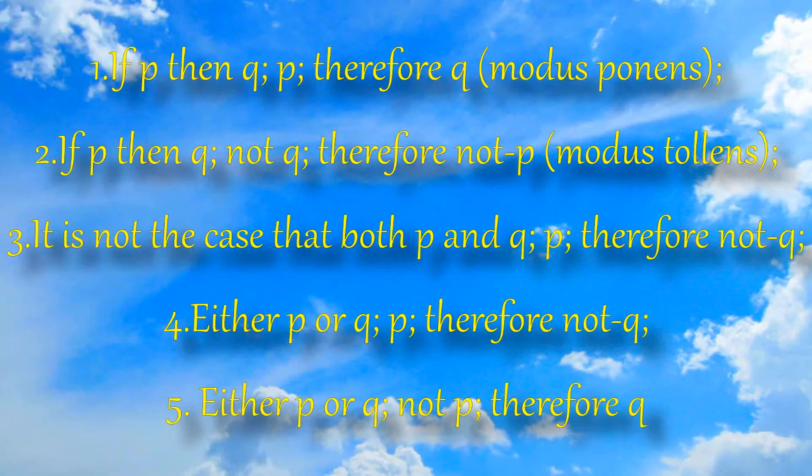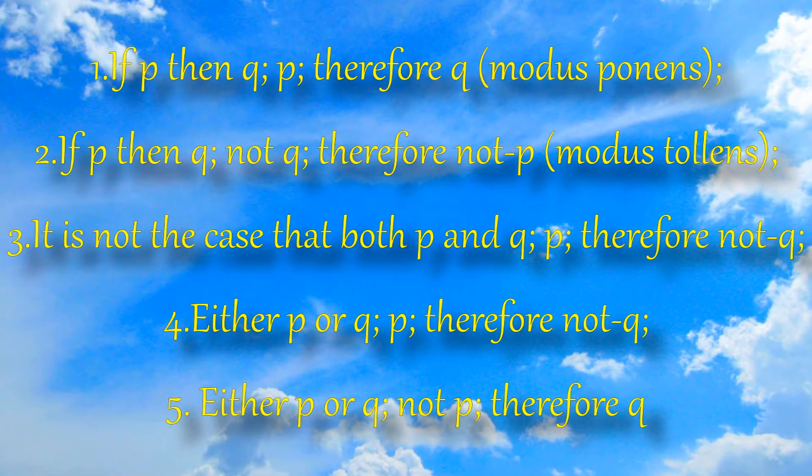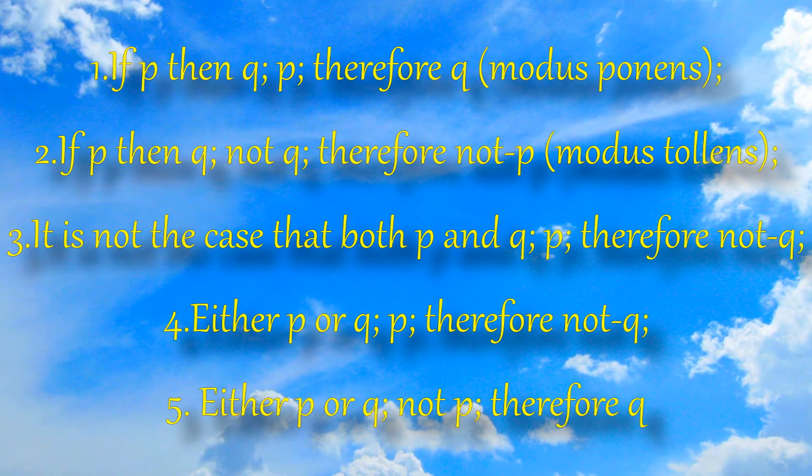Their logical system is basically like what I covered in my videos on symbolic logic, but they only take five basic tenets. If an argument can be simplified down to those things, it's considered valid. 1. If P, then Q, P, therefore Q — or what we would call modus ponens.